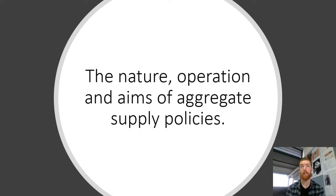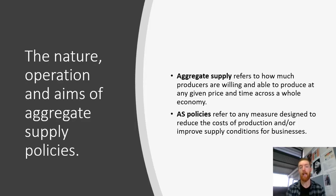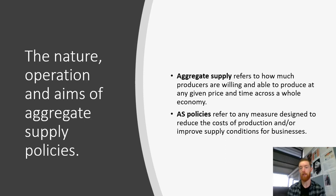Aggregate supply-side policies are all about anything that affects the productivity, efficiency, or cost of production for businesses, and allows them to either increase their productive capacity or increase their efficiency so they are producing at a higher rate. Everything we look at will directly impact businesses and either the quality or quantity of resources available for them to use. Aggregate supply refers to how much producers are willing and able to produce at any given price and time across a whole economy. These policies refer to any measure designed to reduce the cost of production and/or improve supply conditions for businesses.